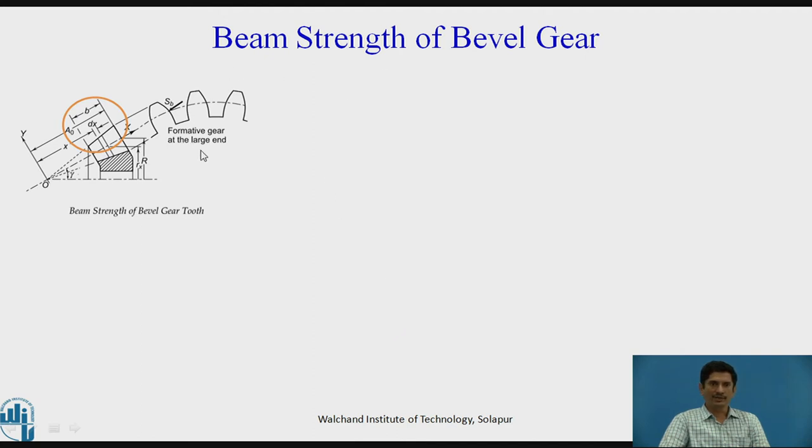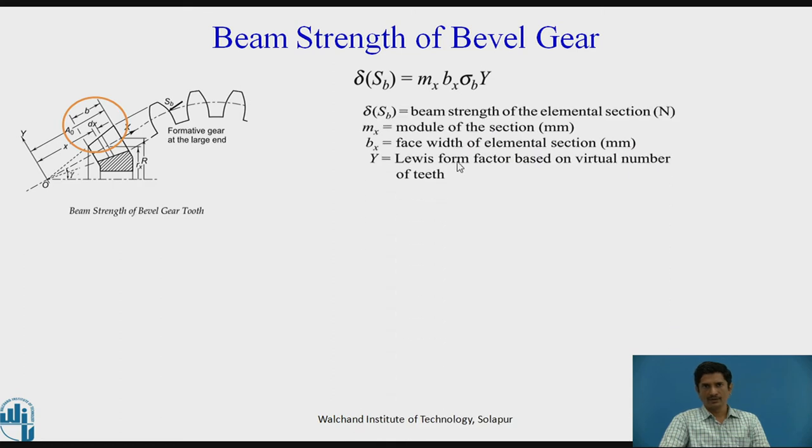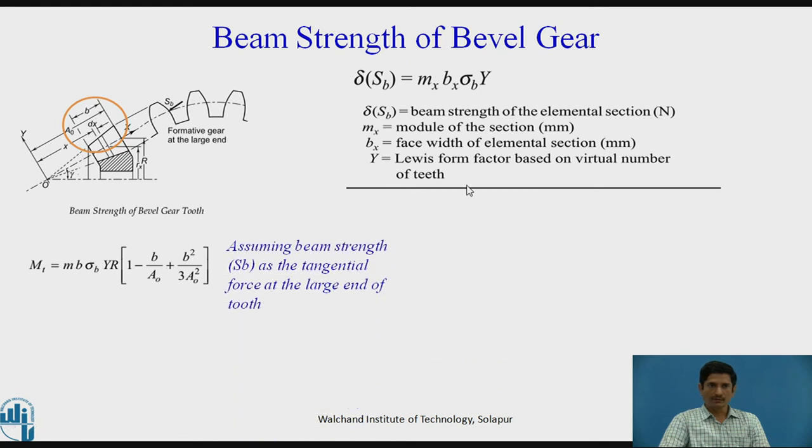When we derive a beam strength of a bevel gear, it is derived at the larger end of the tooth. We need to consider delta SB equals MX times BX times sigma B times Y, where delta SB represents beam strength of the elemental section in Newton, MX is the module of the section in millimeter, BX is the face width of the elemental section, and Y is the Lewis form factor based on virtual number of teeth. The torque is obtained as M B sigma B Y times R times bracket 1 minus B by A naught plus B square upon 3 A naught square. We will assume that beam strength SB is the tangential force at the large end of the tooth, hence MT equals SB times R. From these two equations, SB equals MB sigma B Y 1 minus B by A naught plus B square upon 3 A naught square.